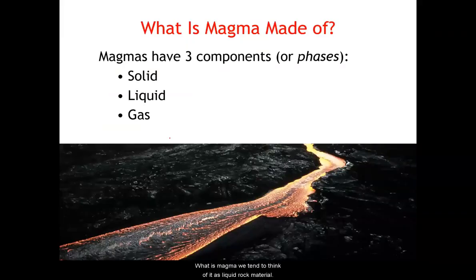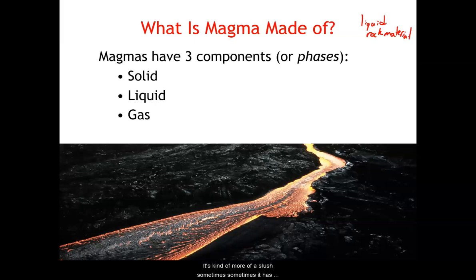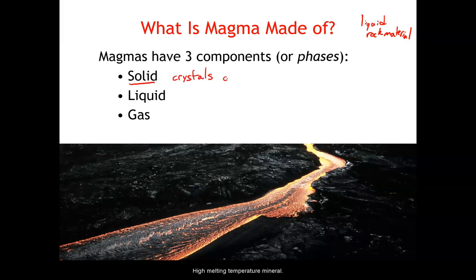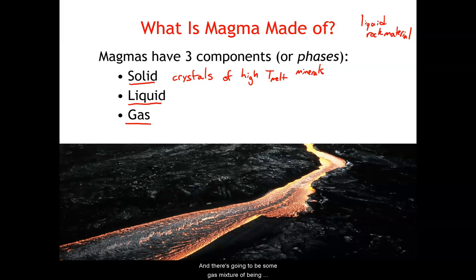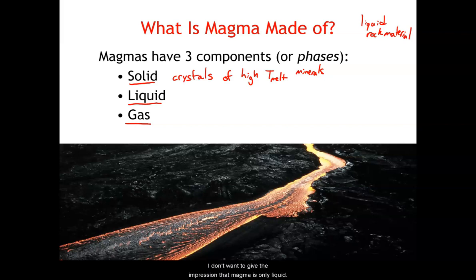What is magma? We tend to think of it as liquid rock material, but in actuality that's a bit of a simplification. It's kind of more of a slush sometimes — it has solid bits in it already, some crystals of high melting temperature minerals. There's going to be a lot of liquid silicate material, and then there's going to be some gas mixed in. The gas ends up being important for things like how eruptive the eruptions actually are, how dangerous they are. So I don't want to give the impression that magma is only liquid — it's got solids and gases in it as well.